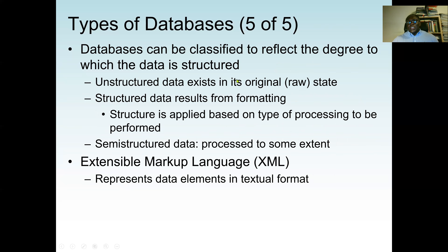Databases can also be classified by the degree to which data is structured. Unstructured data — like online activities — is raw data not organized in any particular format. Structured data, like in a relational database, is formed into rows and columns with defined fields and data types. Unstructured data exists in its original raw state; structured data results from formatting. We also have semi-structured data, which is partly structured and partly not. One earlier technology for semi-structured data is XML — Extensible Markup Language — which represents data elements in textual format.